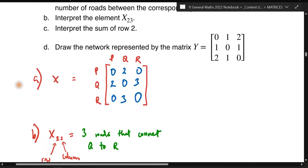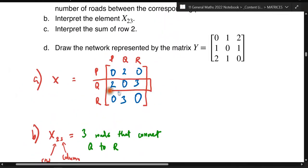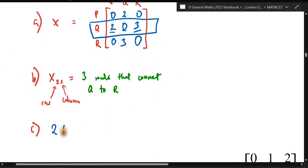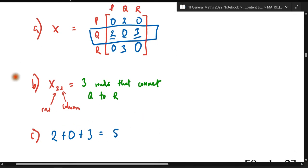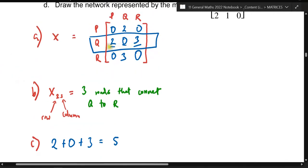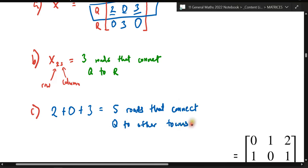Question C asks us to interpret the sum of row two. Row two contains 2, 0, and 3 — adding them gives 2 + 0 + 3 = 5. The interpretation is that there are five roads that connect Q to other towns — it represents all the roads that Q can travel to.